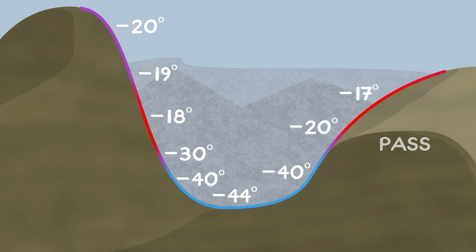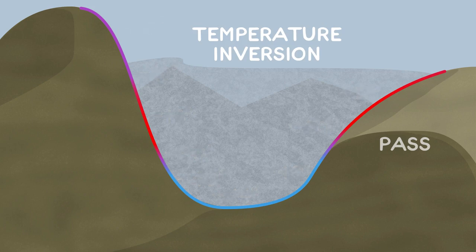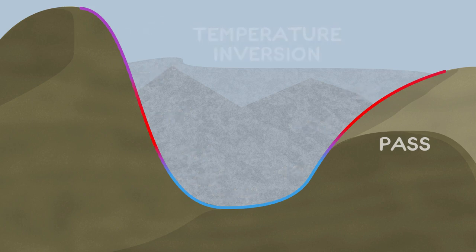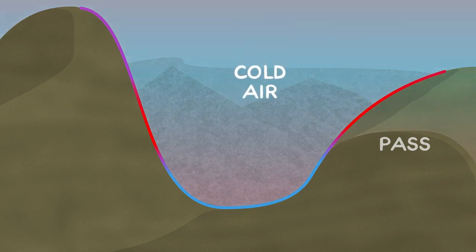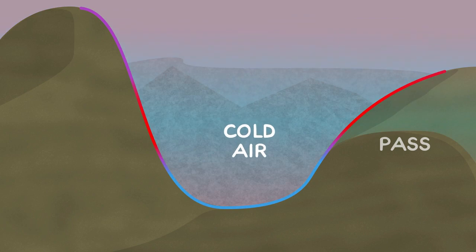This phenomenon is known as a temperature inversion and is relatively common in mountainous areas, especially in winter. Cold air is denser than warm air, so it tends to sink. And in winter, if you get a nasty cold snap, all that sinking cold air will pool in the valleys.